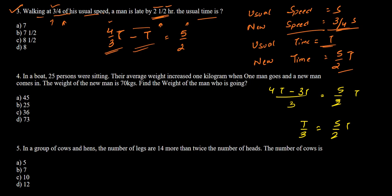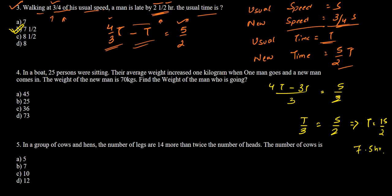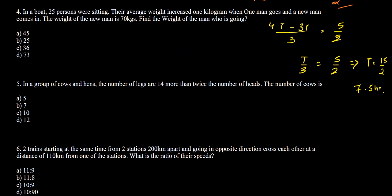So we have t/3 equal to 5/2, which gives t equal to 15/2, which is 7.5 hours or 7 and a half hours. In option B we have 7 and a half hours, so option B is the correct answer to this question. Moving on to question number 4.